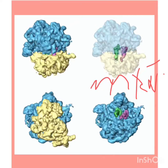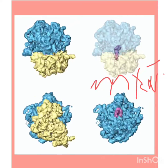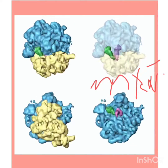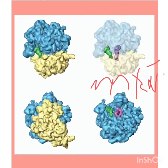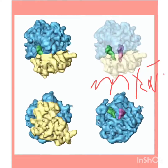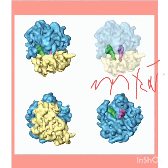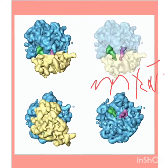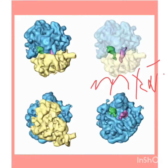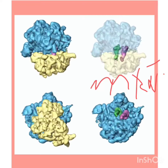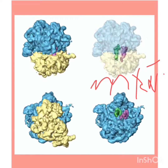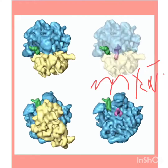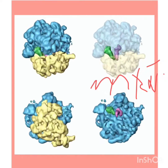Are ribosomes present in humans? Yes. Human ribosomes are 80S and have a molecular weight of 4.3 million. In real life, ribosomes are the organelles present in cells that help cells in making proteins.